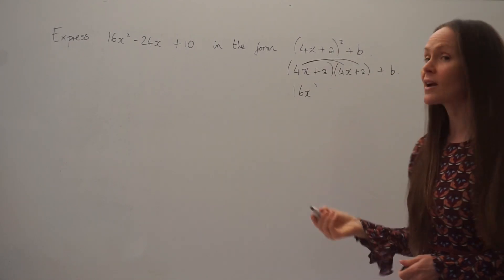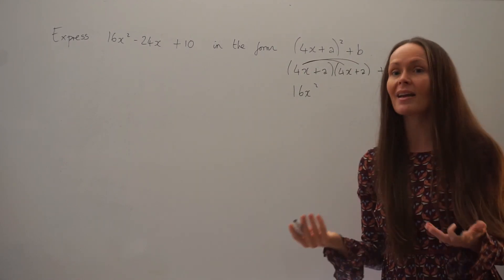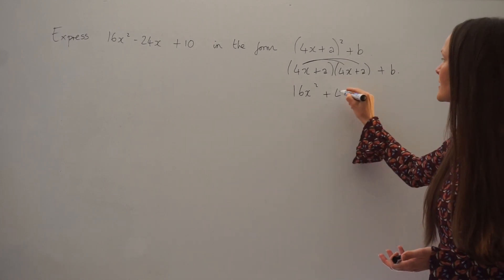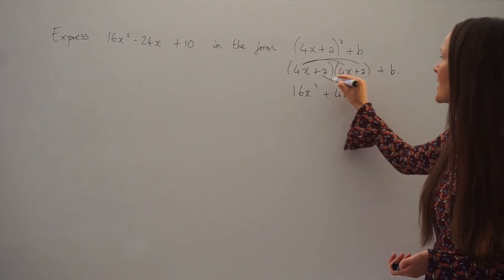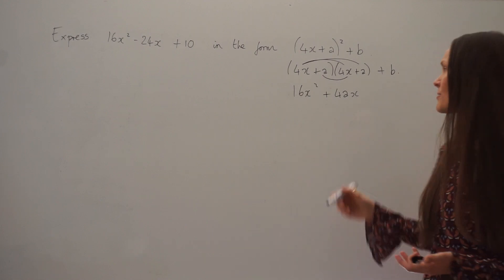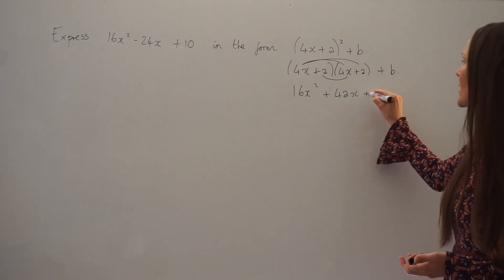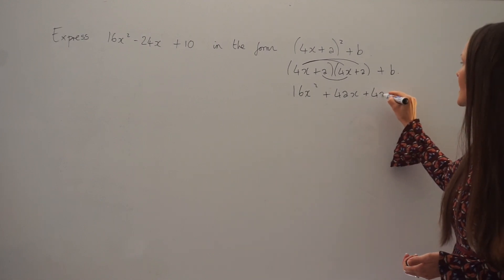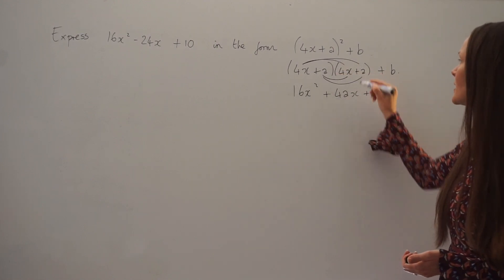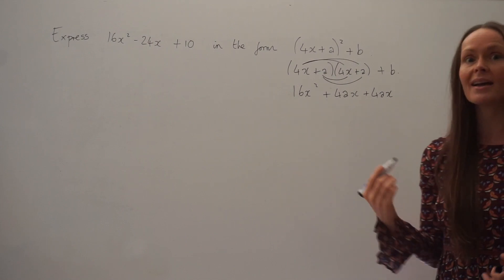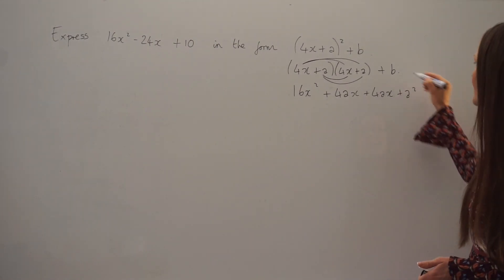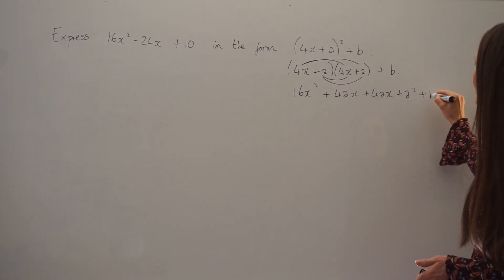So I'm going to multiply the brackets starting with 4x multiplied by 4x, which is 16x squared. Next, 4x multiplied by a is just 4ax. Then a multiplied by 4x is the same thing, so 4ax. And lastly, a multiplied by a is a squared. And not forgetting to write down the plus b.